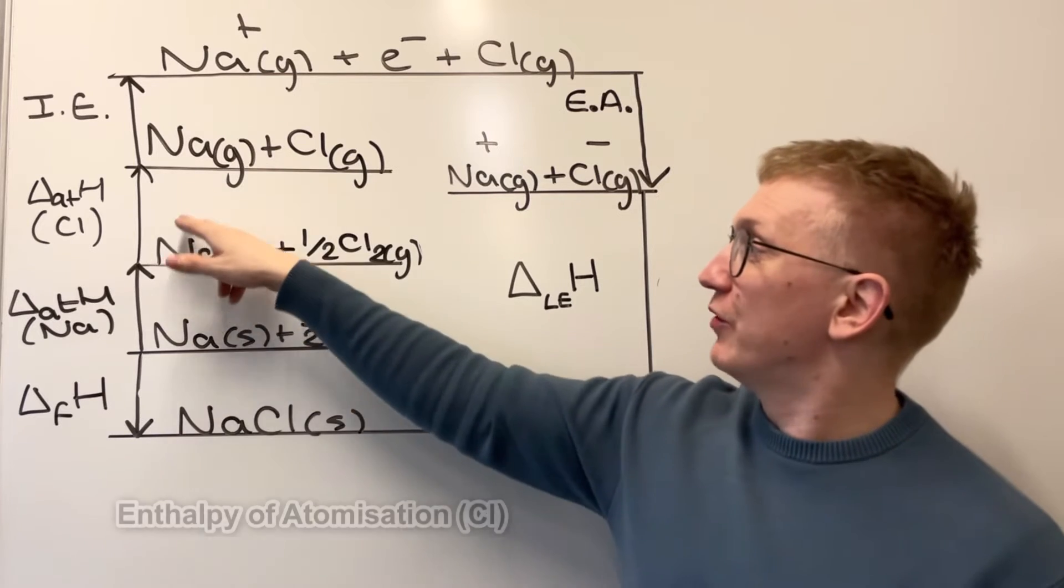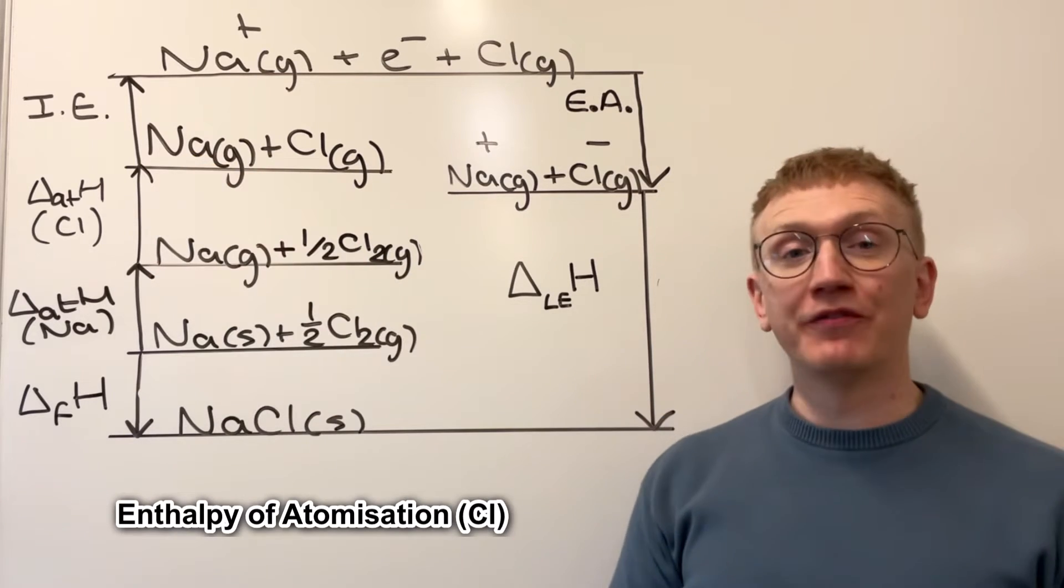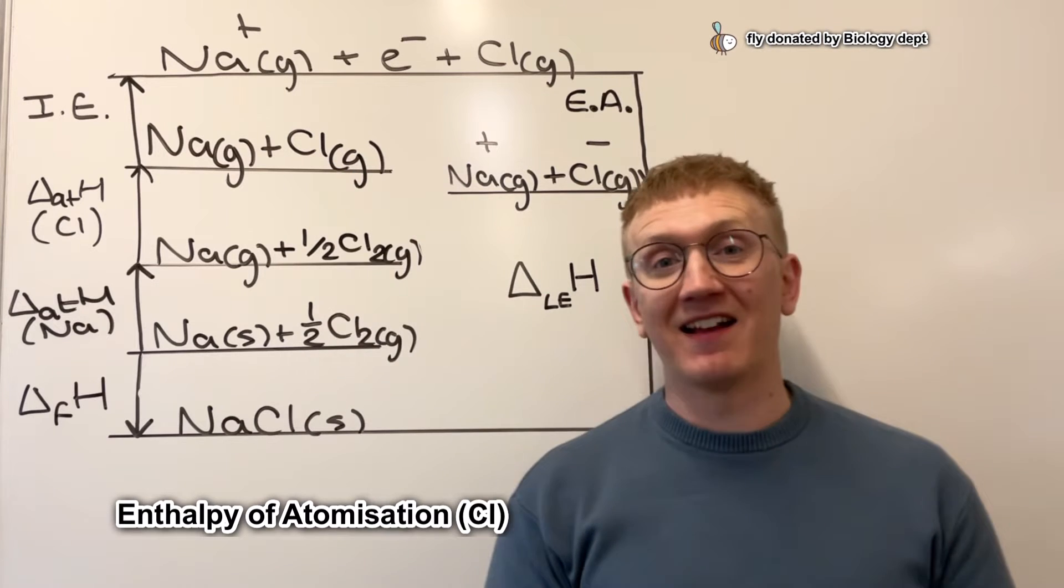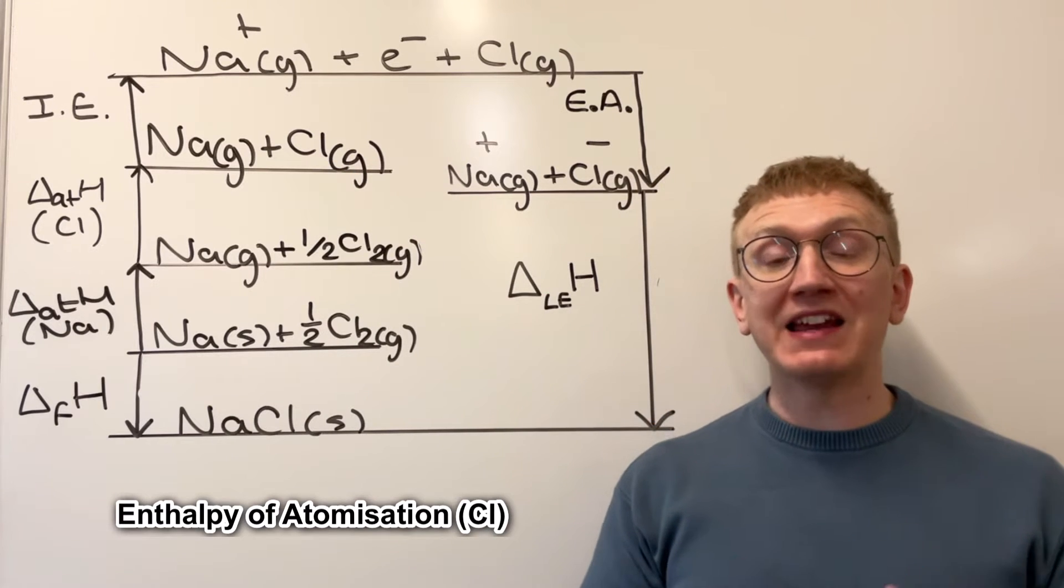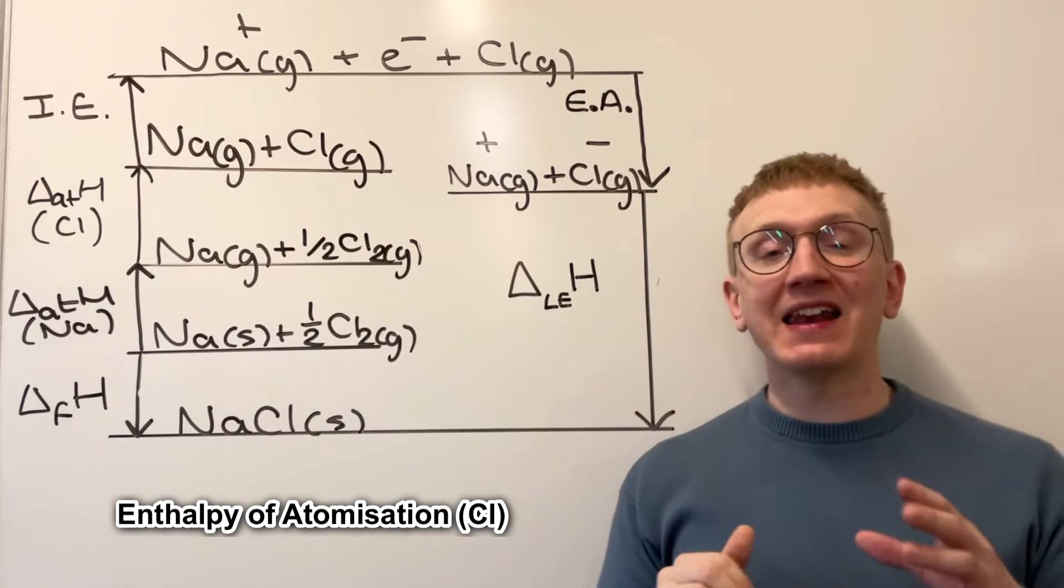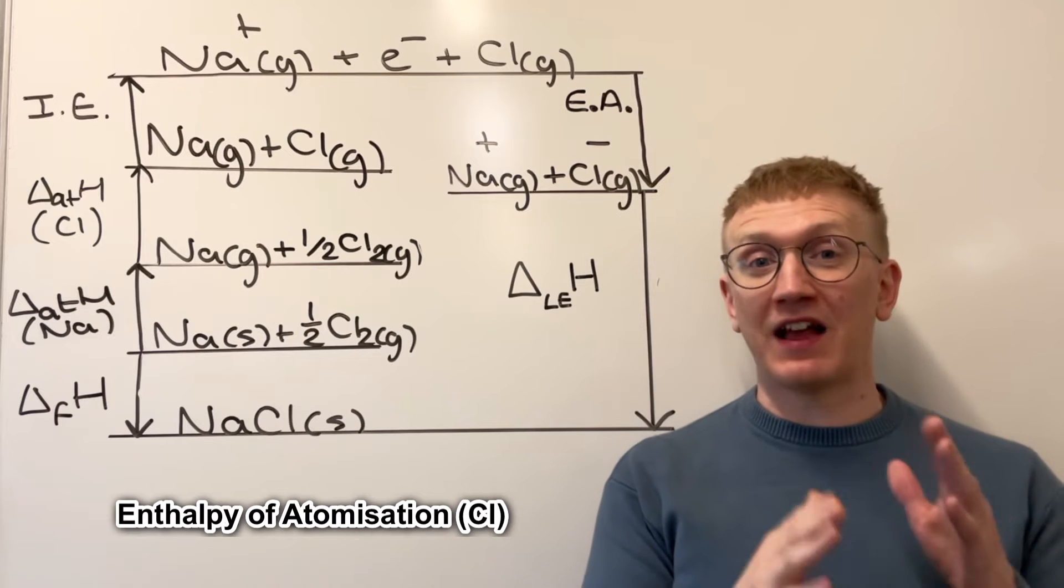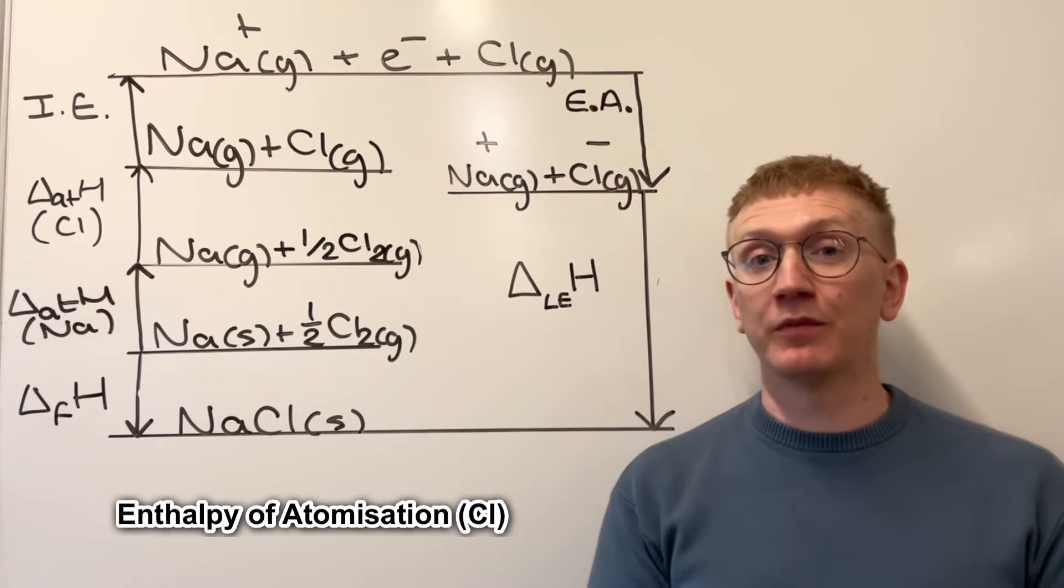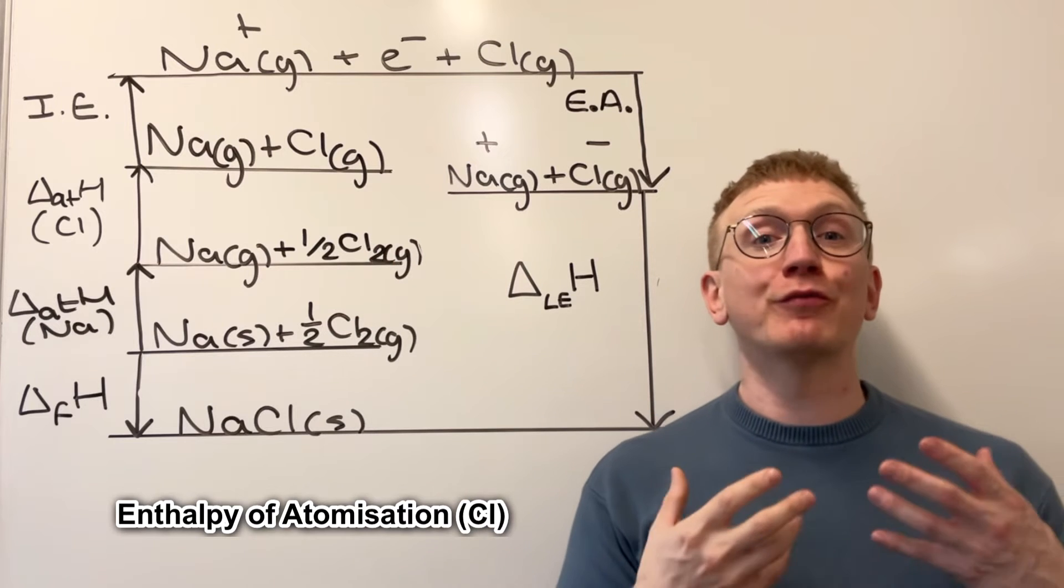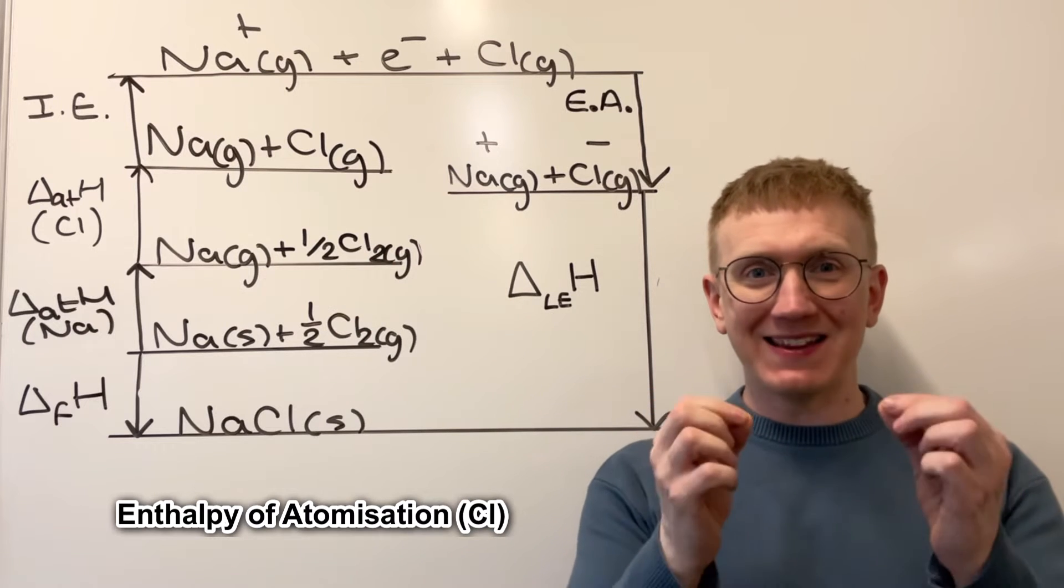Very similar next, we're moving on to the enthalpy of atomization for the chlorine, going from half a mole of Cl2 here to Cl gas. What we're doing here is breaking covalent bonds. And so once again, in order to break that electrostatic attraction between a shared pair of electrons and the nuclei of the two bonded atoms, which is our covalent bond in the Cl2 molecules, that's going to require energy to break that attraction.